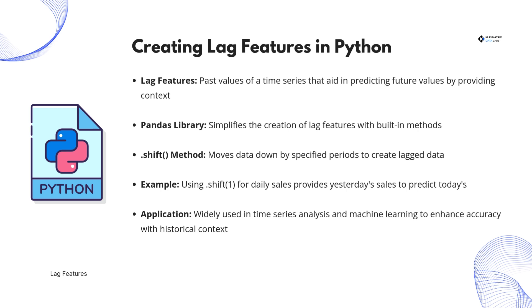For example, using .shift(1) on a daily sales dataset would return yesterday's sales, which could be used to forecast today's sales. By leveraging this technique, we can enhance the accuracy of our predictive models.